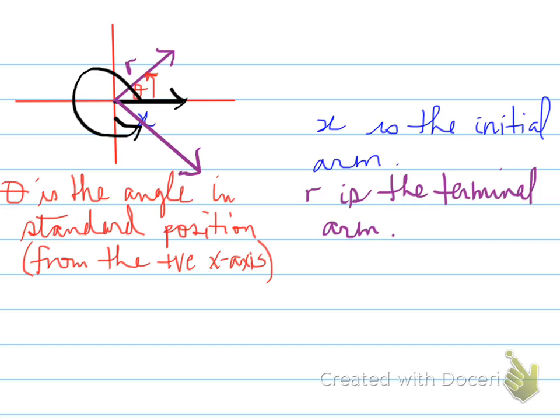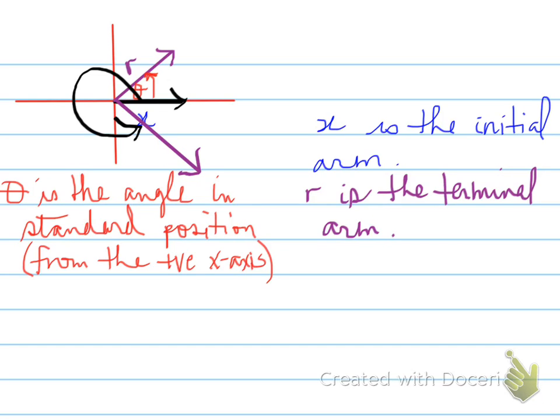I can draw another terminal arm where the terminal arm is drawn in the fourth quadrant. So the angle from standard position goes from the black ray all the way around to the purple arrow. It is always measured from the positive x-axis going in a counter-clockwise direction to measure a positive angle.